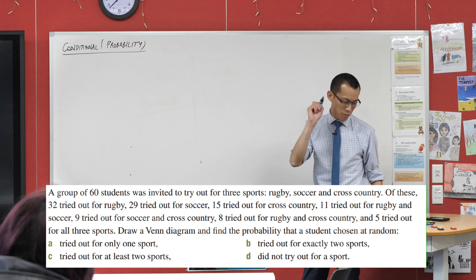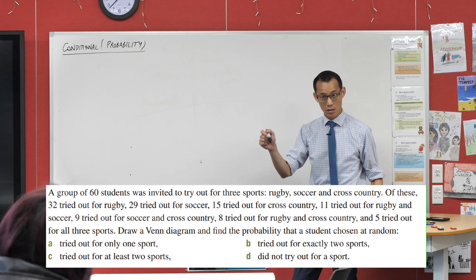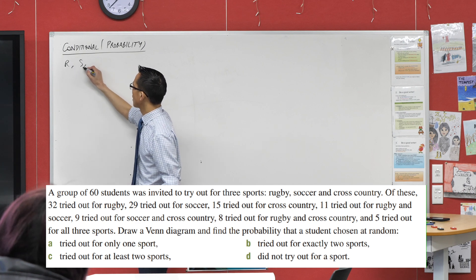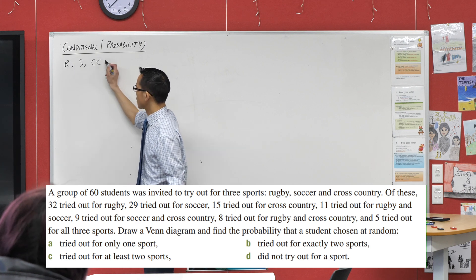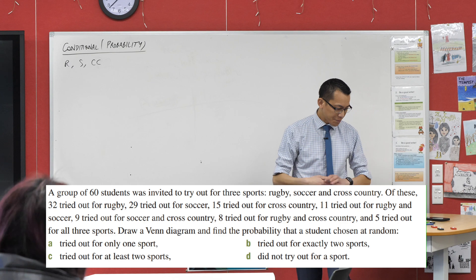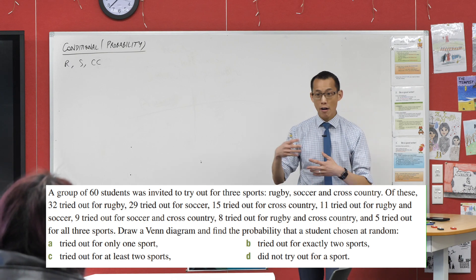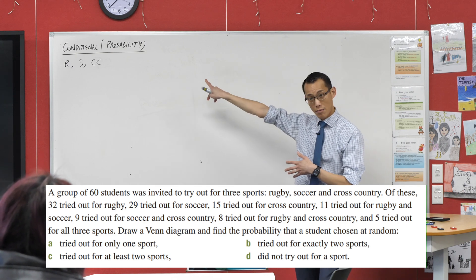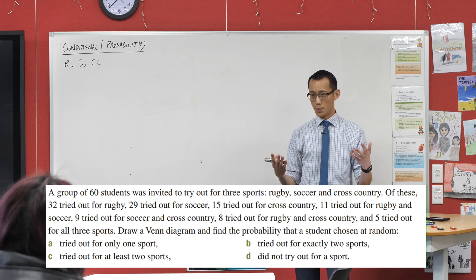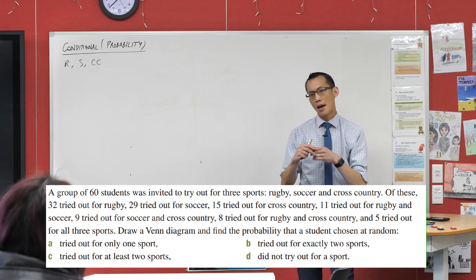We've got these three sports: rugby, soccer, cross country. 60 students try out for each of the three sports, but some of them try out for multiple sports, and the groups overlap.